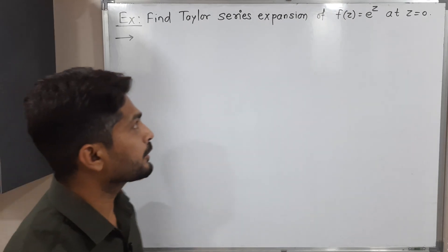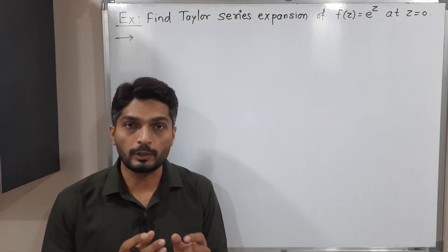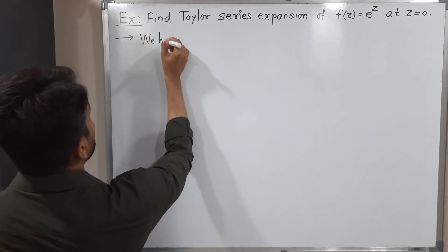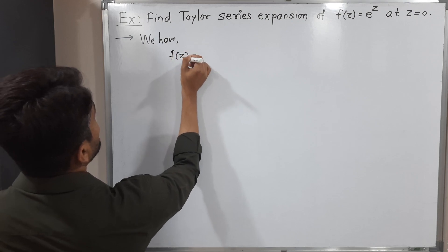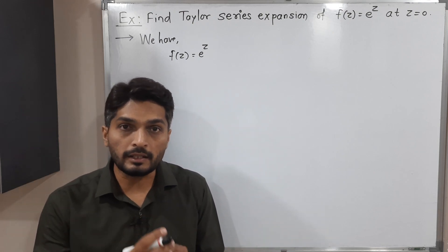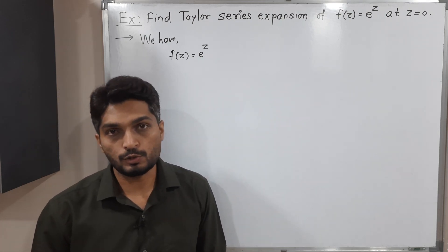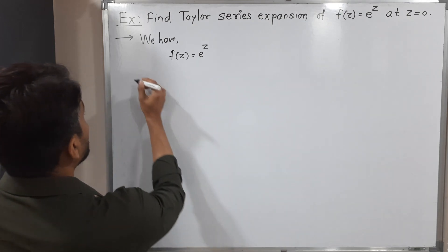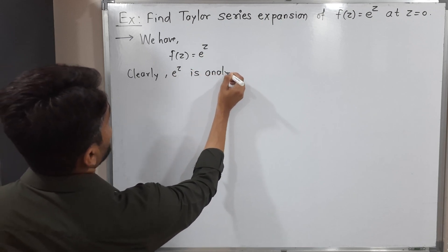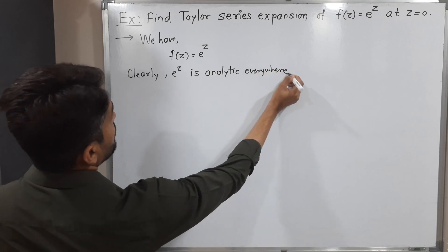Hi everyone. In this video we are going to find the Taylor expansion of a given function f(z) = e^z at the point z = 0. Let us note down the given function: f(z) = e^z. We can find the Taylor expansion if the function is analytic in a neighborhood of the given point z₀. Since e^z is always analytic, we can find its Taylor series. Clearly, e^z is analytic everywhere in ℂ.